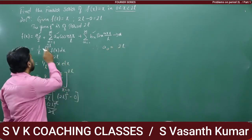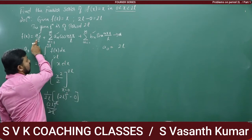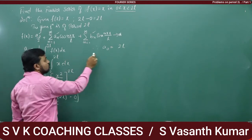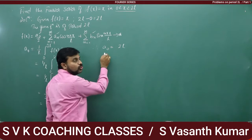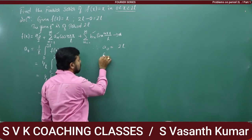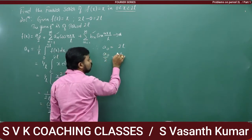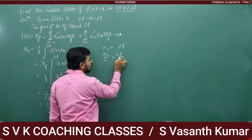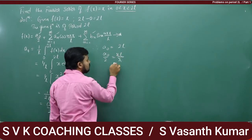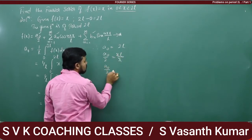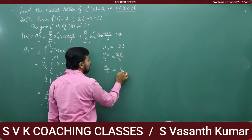But in equation star, we require a₀/2. So dividing both sides by 2: 2 by 2 gets cancelled. Therefore a₀/2 = L.